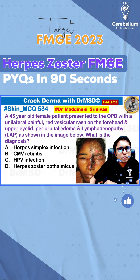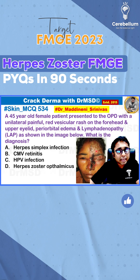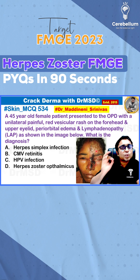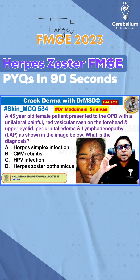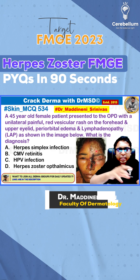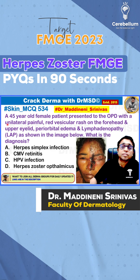A few points about herpes zoster: the causative virus is varicella zoster virus, which lies dormant in the dorsal root ganglion. When it gets reactivated, it produces multiple vesicular lesions along a dermatome — we can say unilateral or segmental. These are the keywords that will be given in the question.